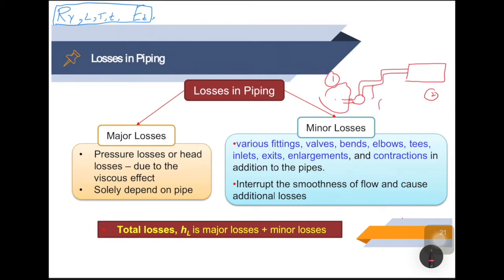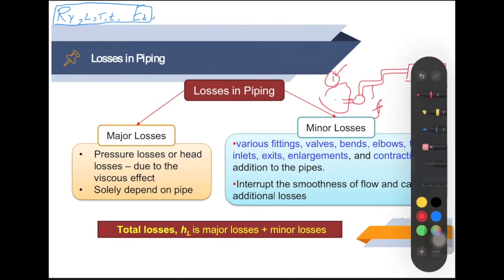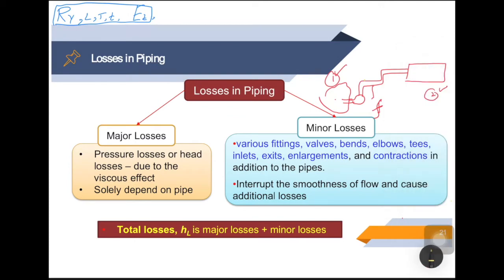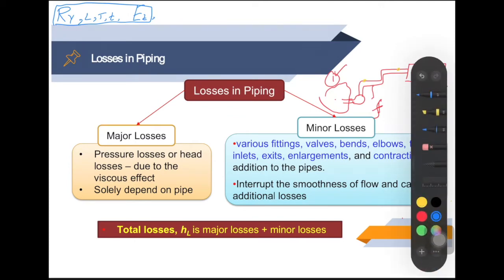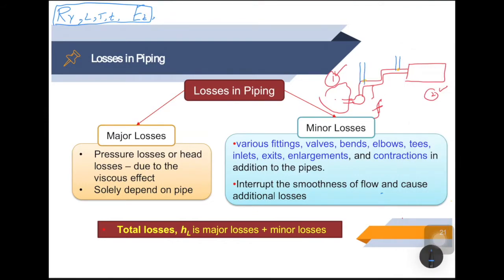What happens is that due to the frictional effects of the pipe — due to the no-slip condition, frictional effects, and consequently the viscosity of the fluid — there is pressure loss. When I want to transport fluid from one location to another, there is a loss of pressure. You can drill a hole at two points and install a manometer. What you would observe is that the height of the first manometer is higher than the second. So there is a loss of pressure delta P, where P1 is greater than P2.